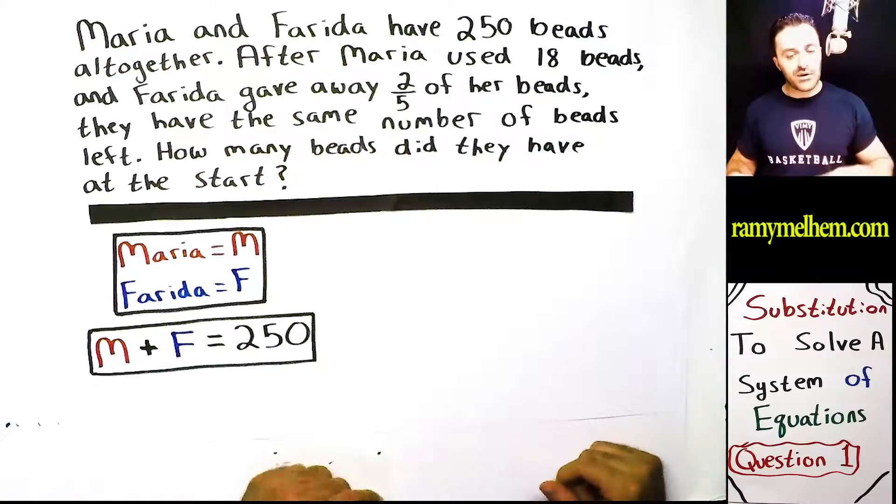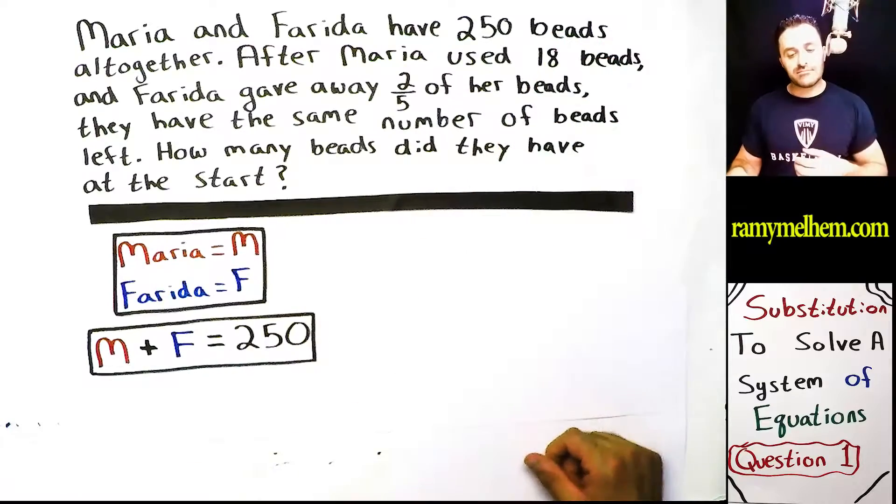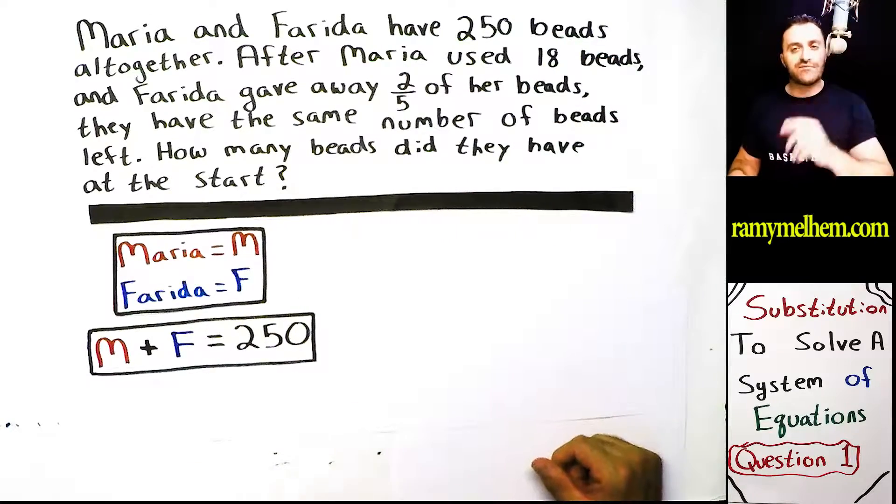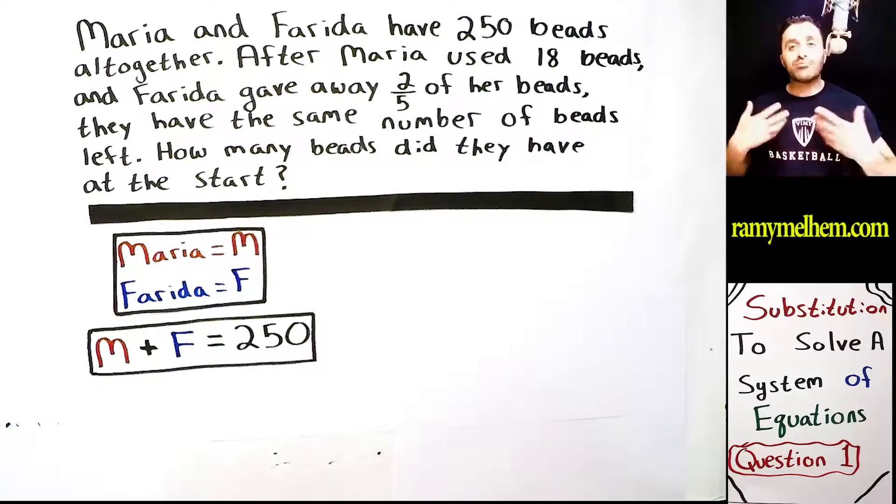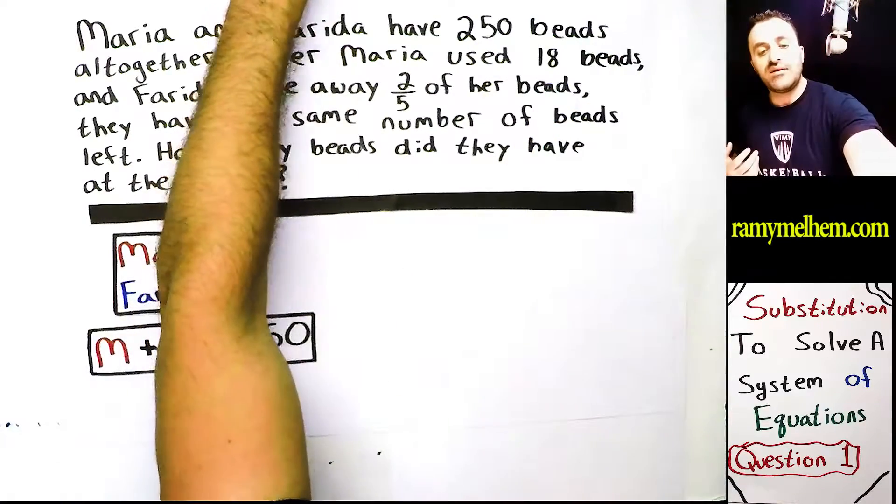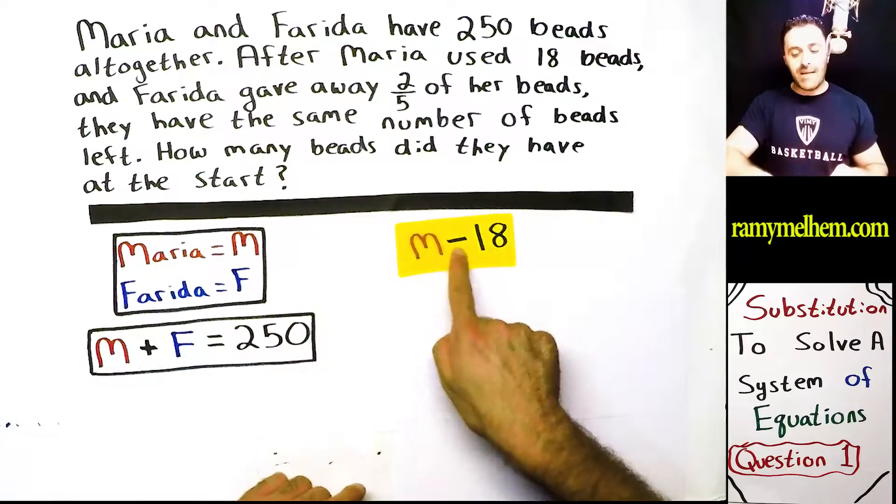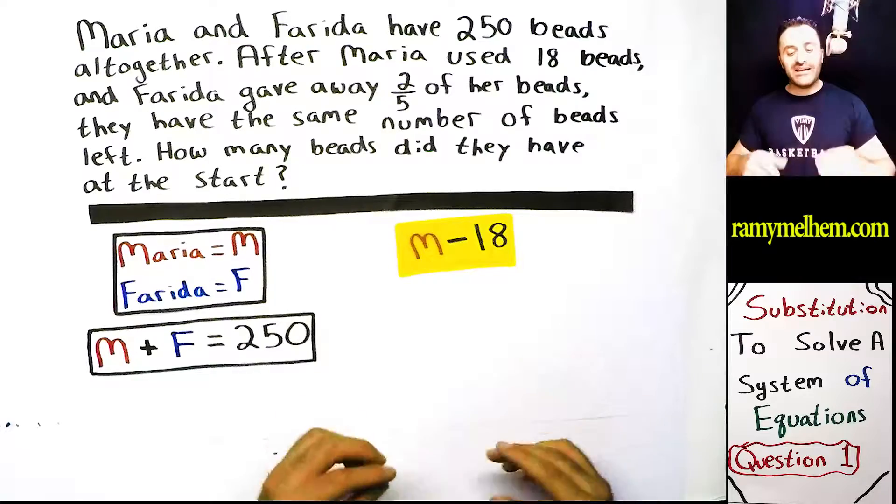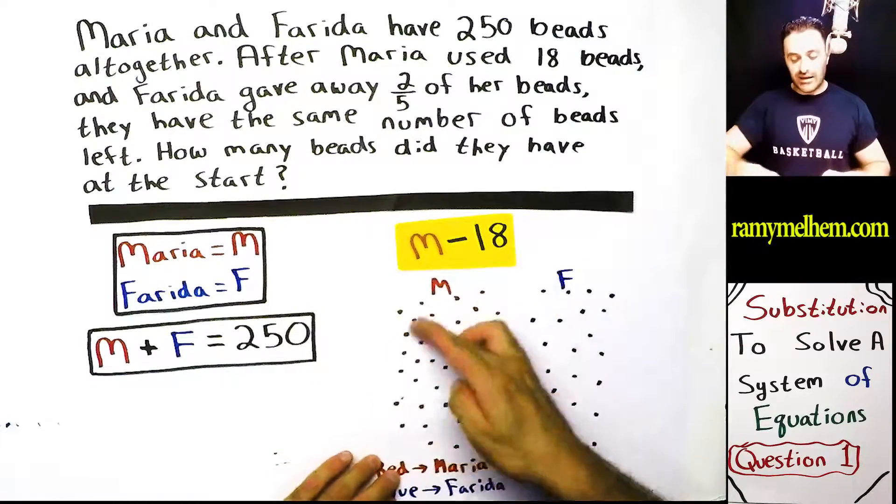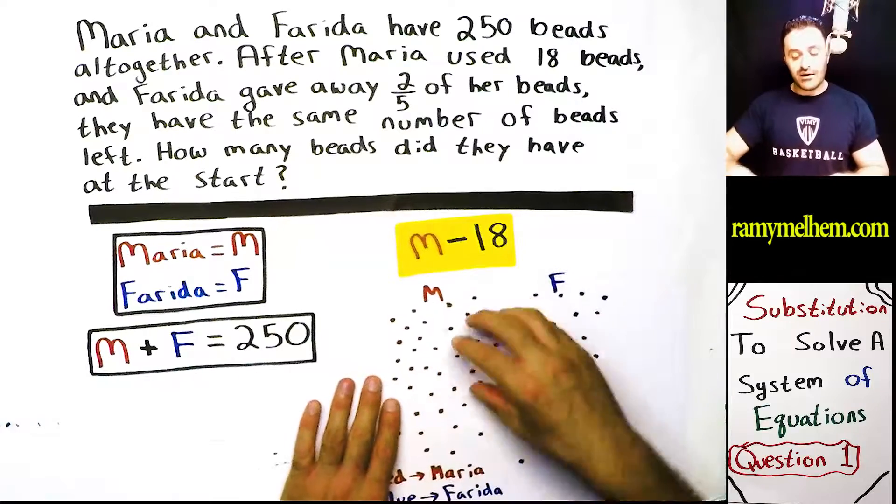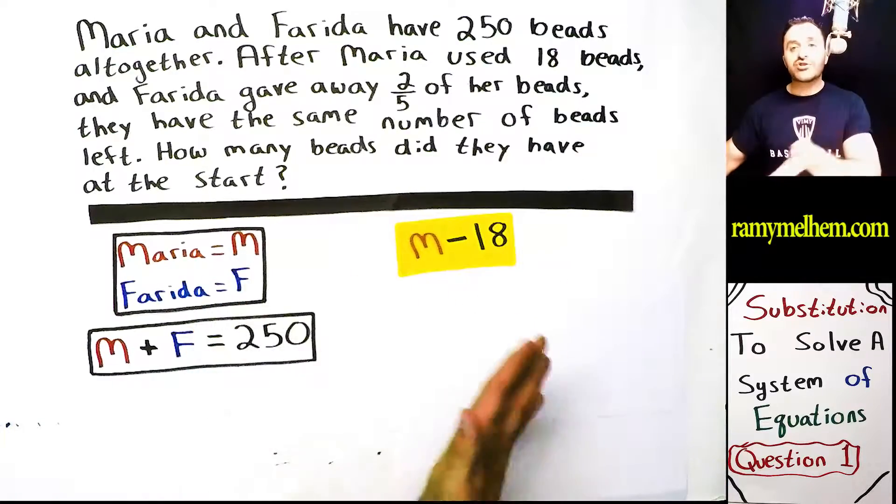What else do we know? It says next, after Maria used 18 beads. That also looks very familiar. This word used 18 beads. You know, when you use things up, you're subtracting them. So we're going to take that information and convert it into M minus 18. Maria's beads minus 18. What does that look like here? It means take Maria's beads, just Maria, subtract 18. That's what happened.